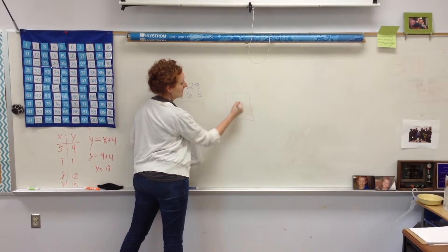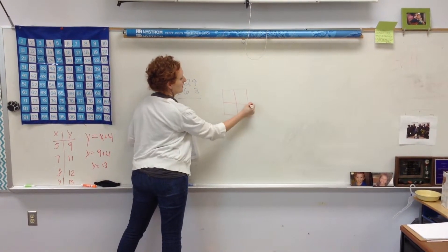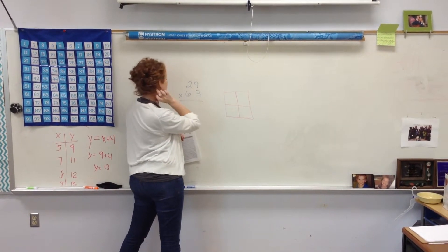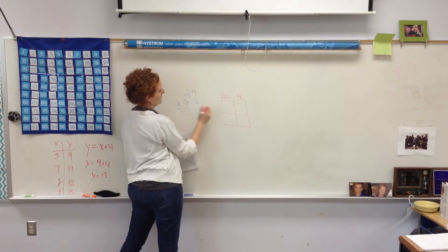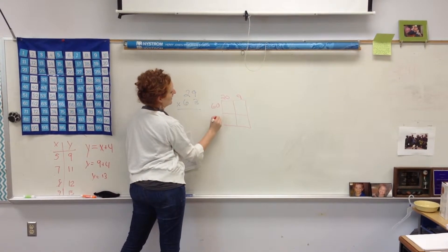So, they set up, this is why it's called window pane, it's like window pane. And they decompose this into the tens and ones. So, 29 would be 20 and 9, and 63 would be 60 and 3.